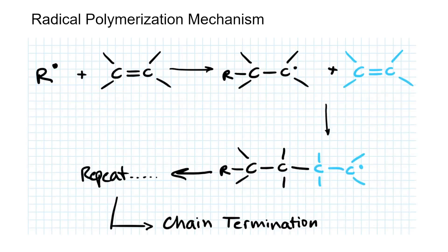Let's look at the radical polymerization mechanism. We have our free radical here. What's going to happen is the free radical, with its electrons, will react with your vinyl monomer.